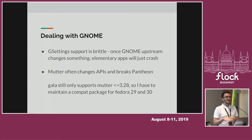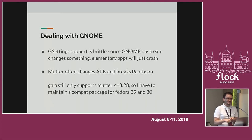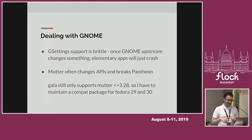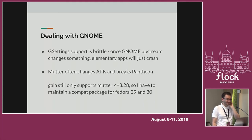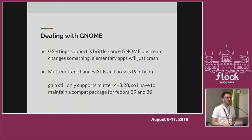The window manager used for Pantheon is Gala, built on top of libmutter. But Mutter often breaks its API and ABI and breaks Pantheon in the process. Gala still only supports Mutter versions up to 3.28, and the current Mutter version in Fedora 30 is 3.32, with 3.34 coming in Fedora 31. So I have to carry a compatibility package for older Mutter libraries in Fedora 29 and 30, which is not easy — I have to carry a lot of patches and the packaging isn't really pretty, but it works.